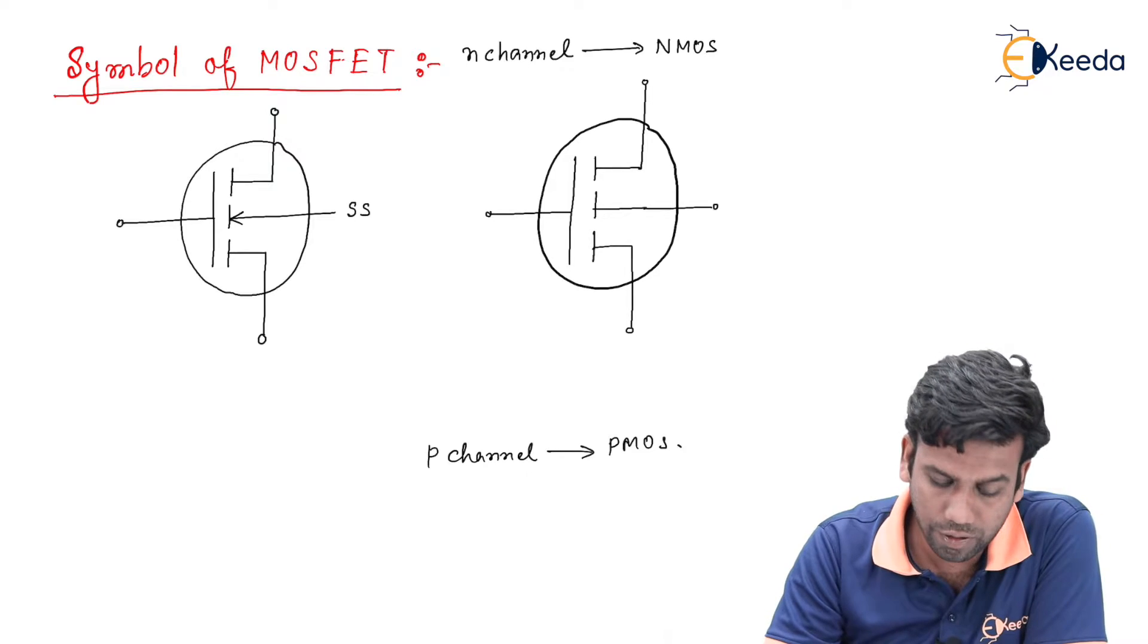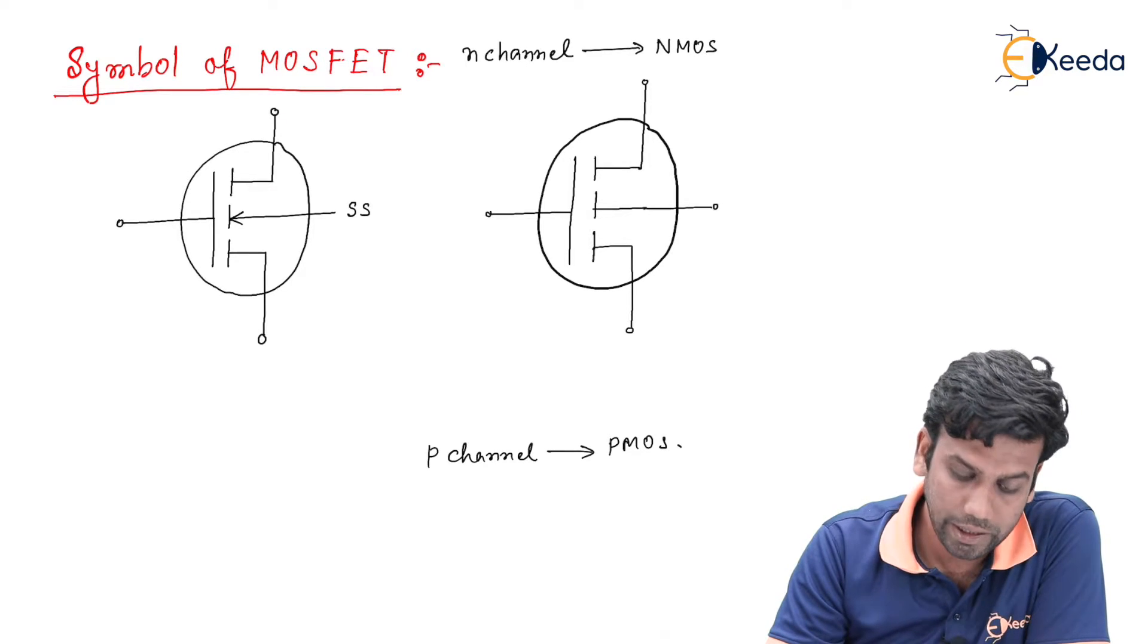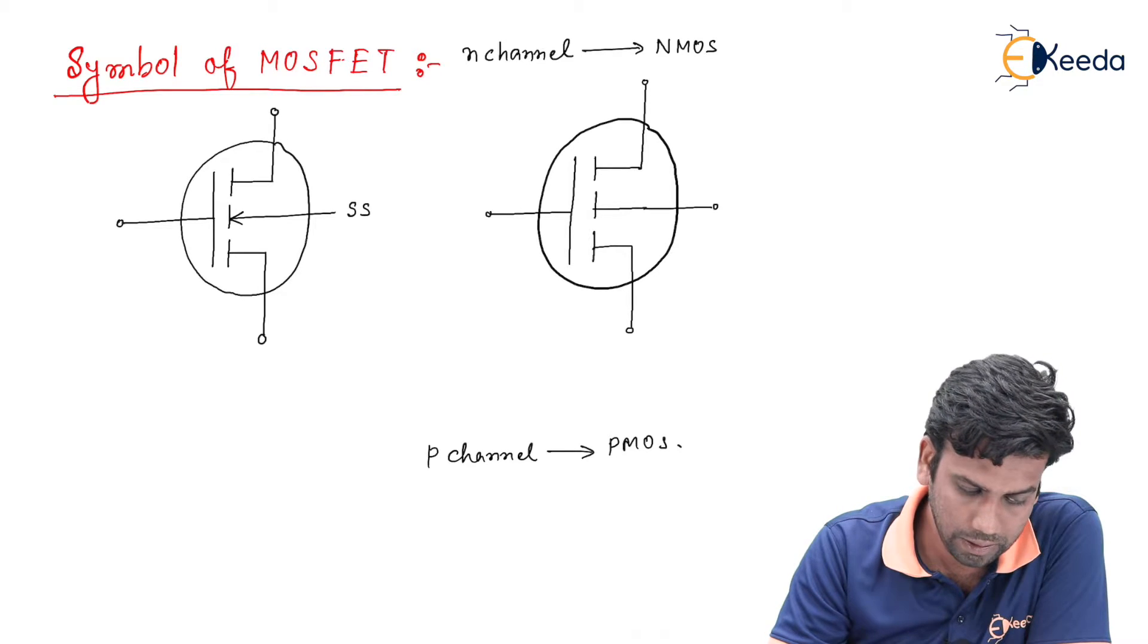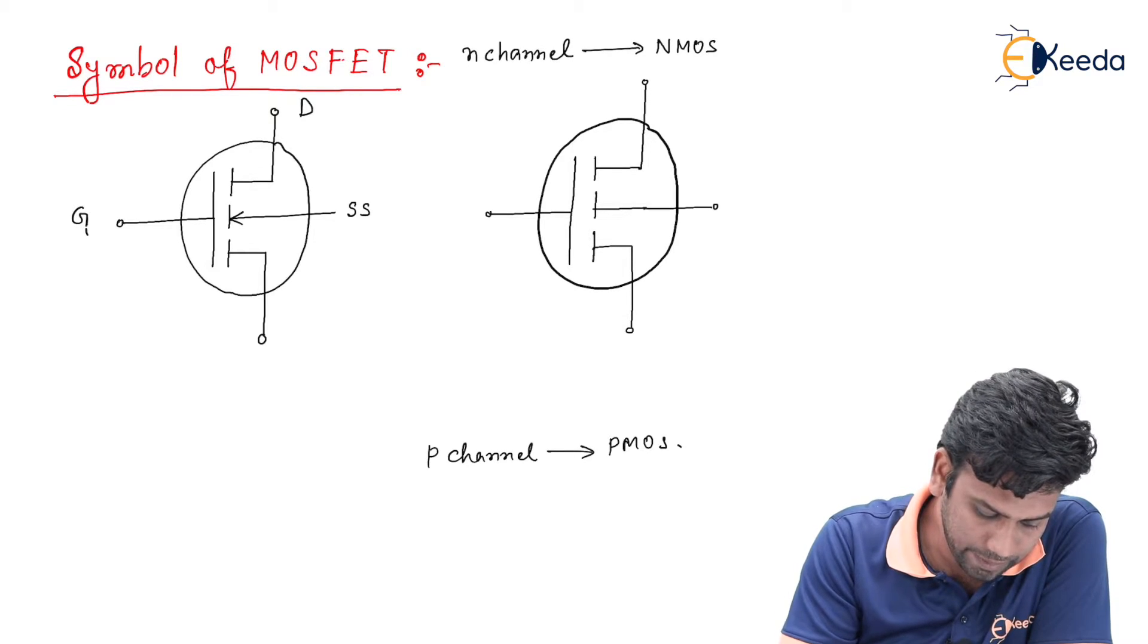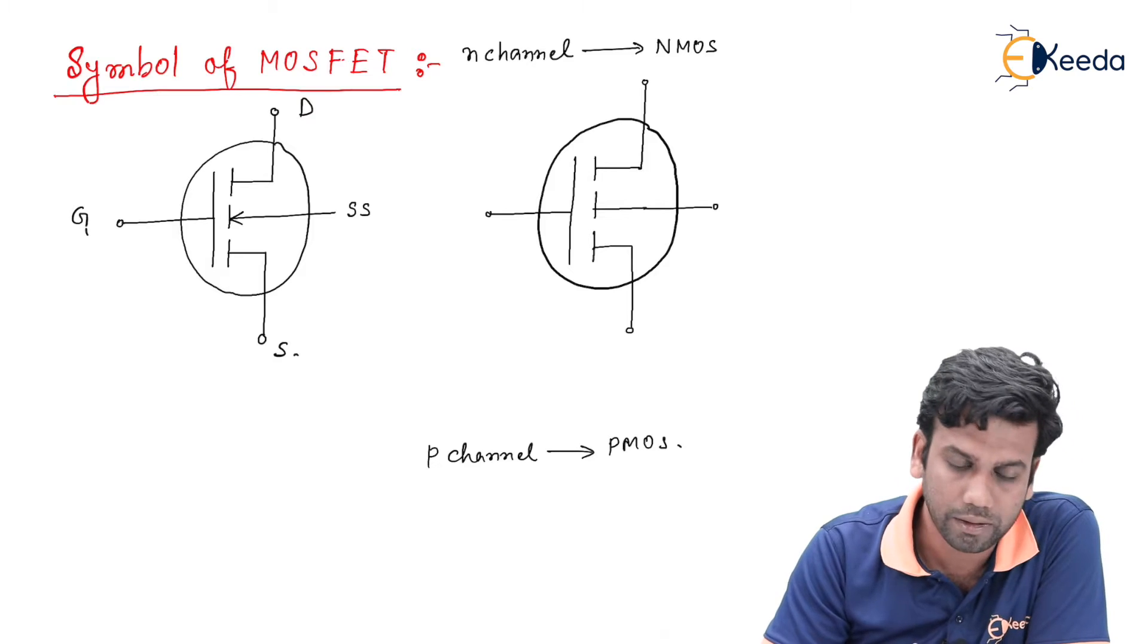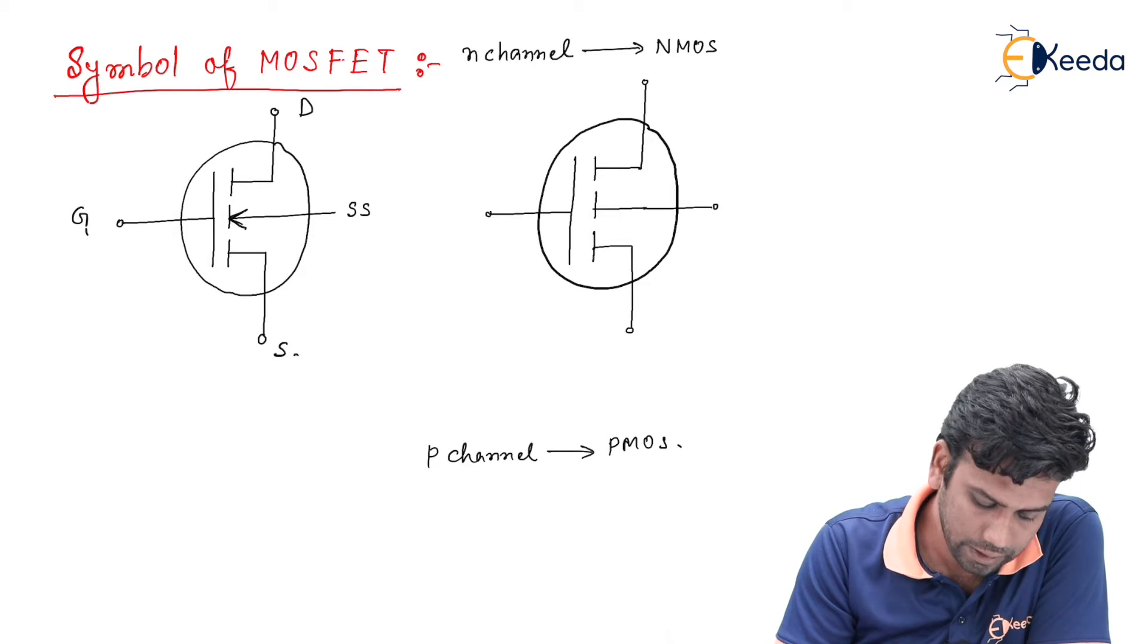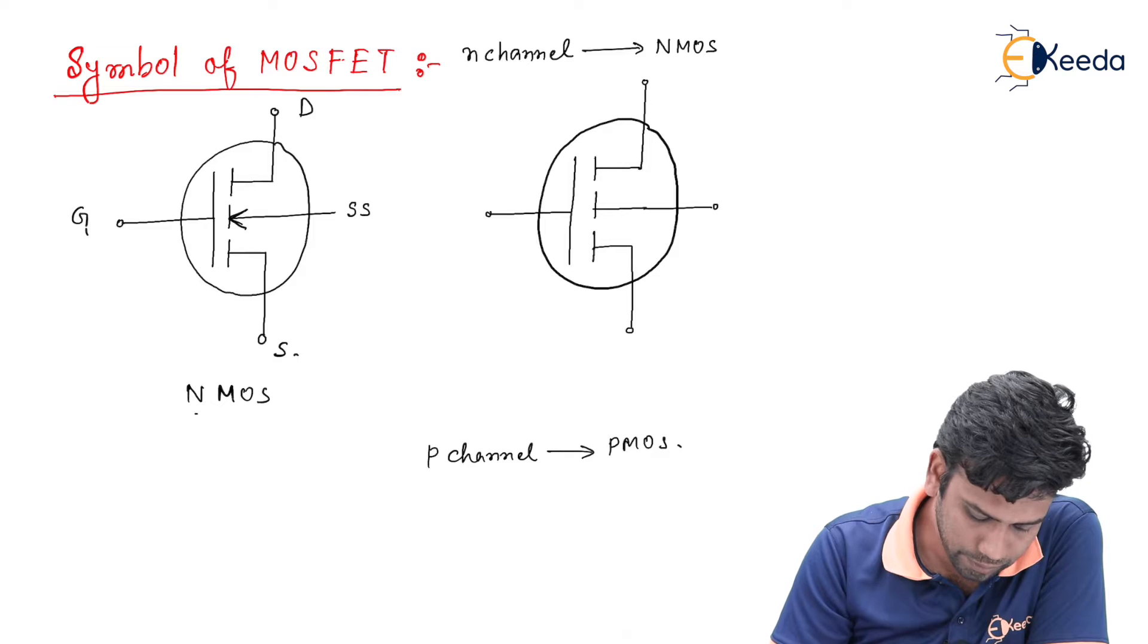Let us first draw the N-channel MOSFET. We know that an N-channel MOSFET has four terminals: the substrate terminal, gate terminal, drain terminal, and the source terminal. In the substrate terminal there is an arrow sign that denotes it is an N-channel or N-MOS MOSFET.